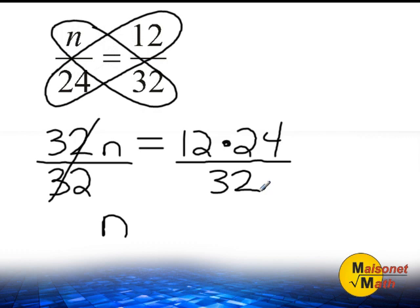Now, notice for the numerator, or 12 times 24, I did not multiply them together. By keeping them separate, it will be easier to cancel out those individual factors with 32. For example, 8 is a common factor of 24 and 32. So I'm going to cancel the 24 and 32 together, and divide both of them by the common factor of 8. 8 can be divided into 24 three times, and 8 can be divided into 32 four times.